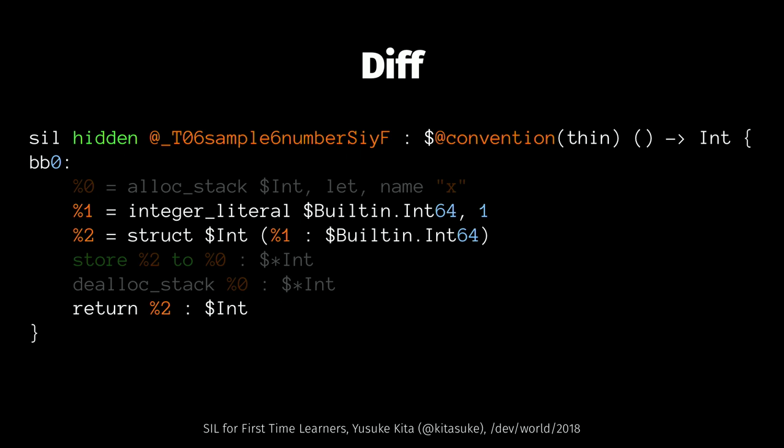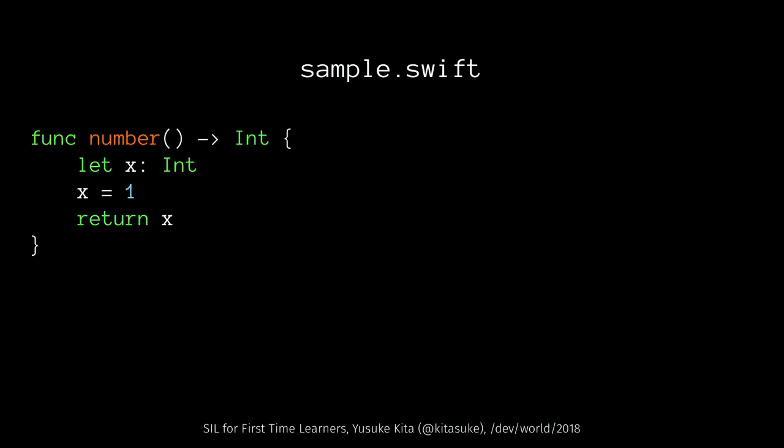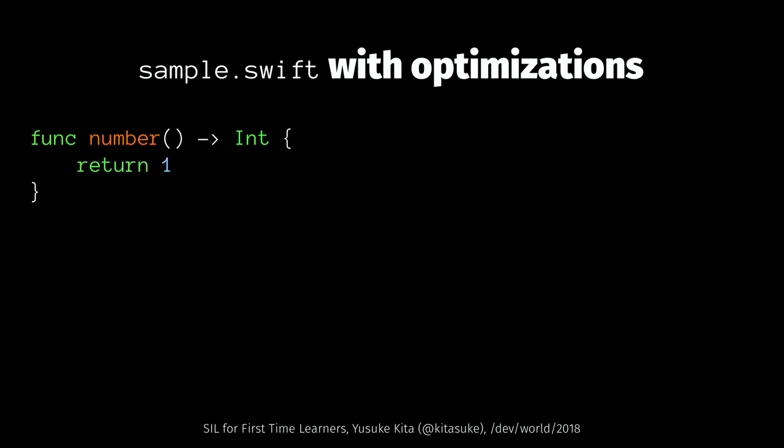But how is this possible? Well, if we go back to the Swift file and look at the function, this `let x` is useless — there's no point in having it because the value is never changed. Do we really need to have `let x` here? The answer is no. Maybe we can just return one immediately. So this is what happens in the SIL stage — this is how it's optimized in SIL. Sometimes we make trivial mistakes in Swift, but the Swift compiler automatically optimizes your code. It's like a linter for you, in other words.